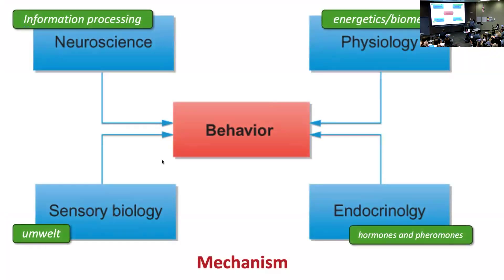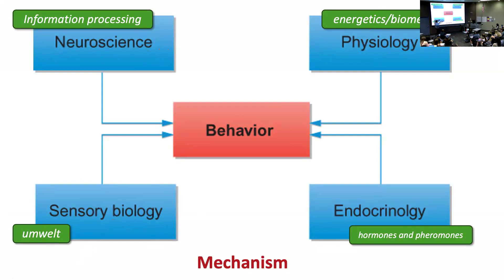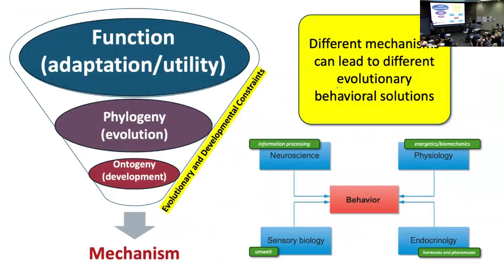Endocrinology is very important, neuroscience is important — there's a whole field of neuroethology studying the neurological correlates of behavior. We have to think about all of these mechanistic constraints and opportunities. It isn't just the endocrine system — we also have to think about neurological mechanisms, sensory biology, the umwelt, general physiology, the energetics of behavior, how expensive it is to perform, and also the biomechanics — is it actually possible to fly with wings of a particular shape? All of these things come together. These are sort of the four different legs of the table that is mechanism.